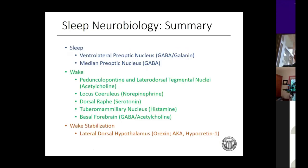To summarize: the key things to remember are the ventrolateral preoptic nucleus and median preoptic nucleus in the anterior hypothalamus, which promotes sleep; the wake-promoting areas and their corresponding neurotransmitters; and wake stabilization via orexin, also known as hypocretin, in the dorsolateral hypothalamus — this crucial neuropeptide.